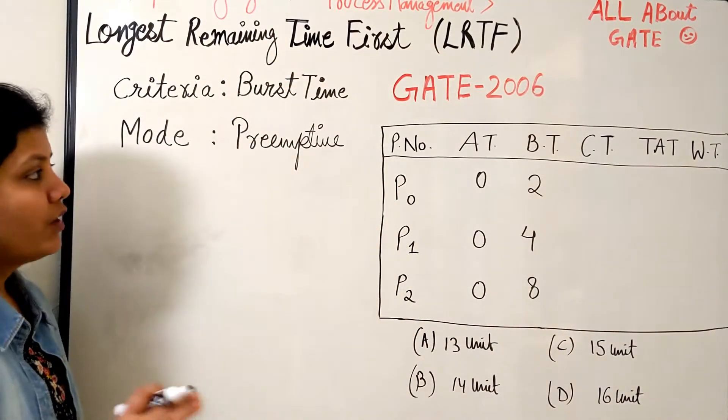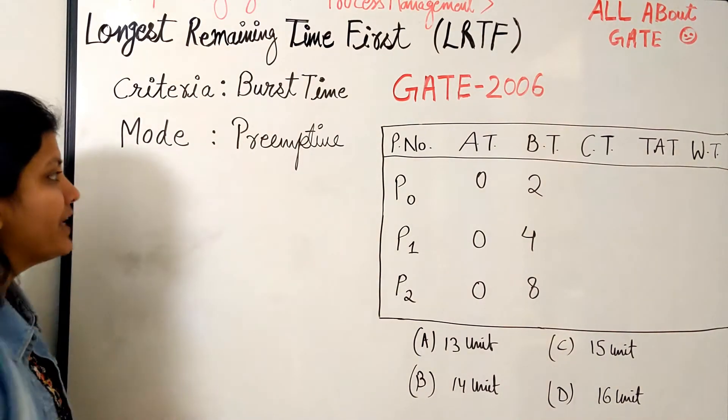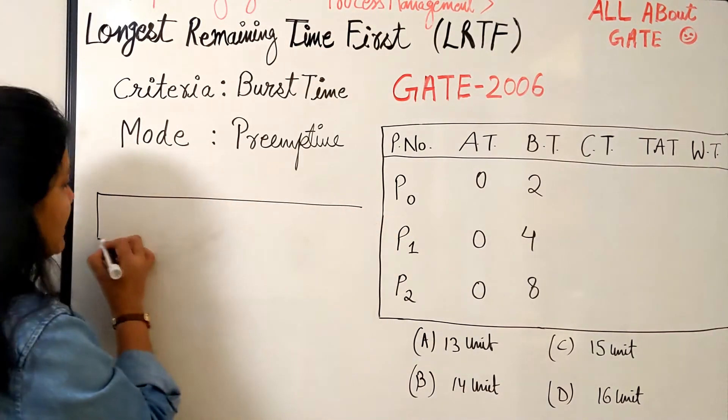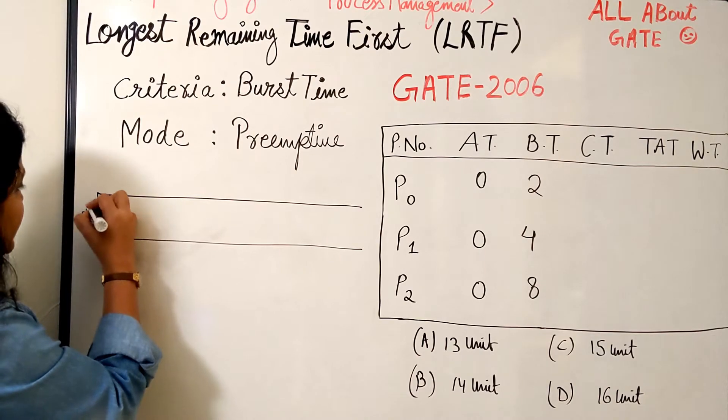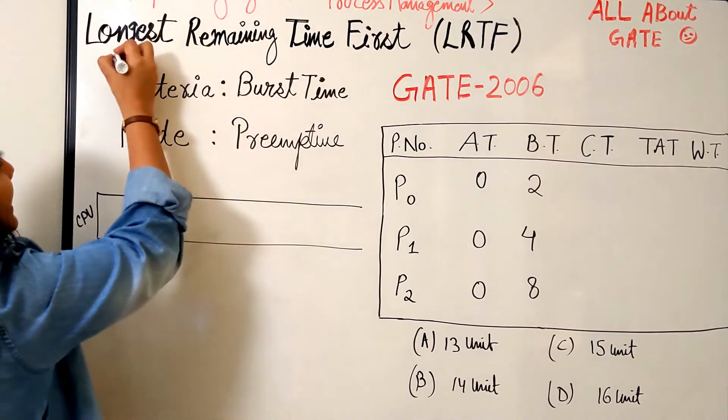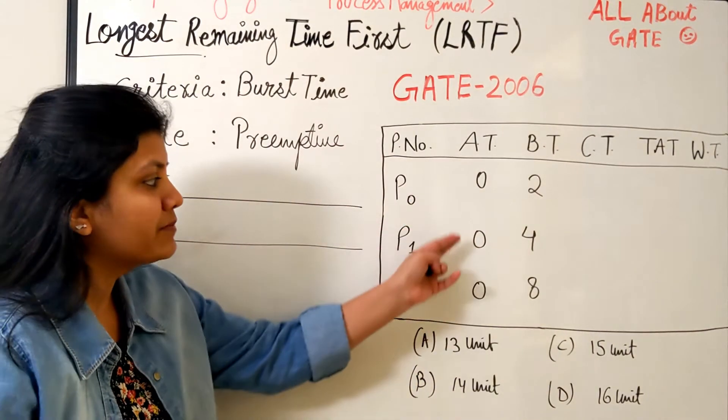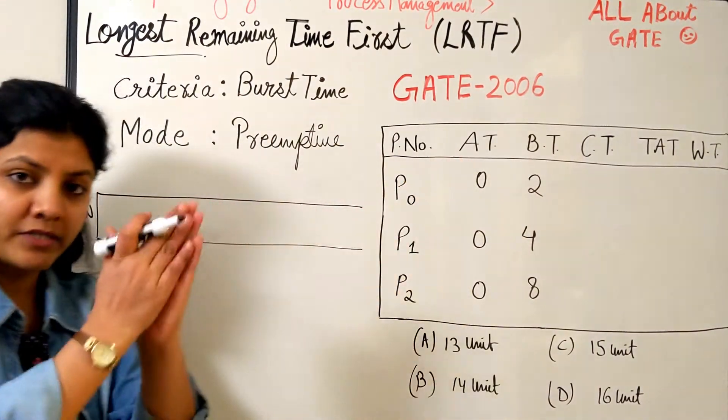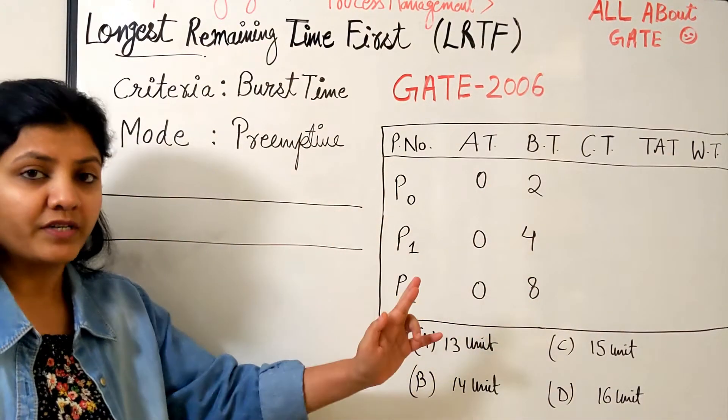Let's schedule the process based on LRTF and understand how this algorithm is actually implemented. Here is our Gantt chart that we are going to design. At time 0, we have all three processes available at the same time. We will look at their burst time; whichever is the longer one will be scheduled first.